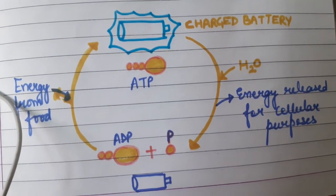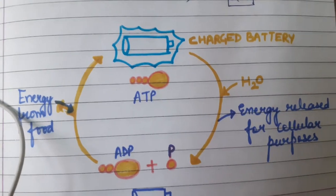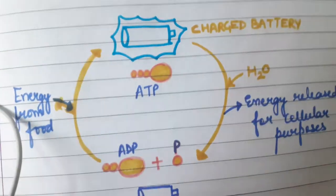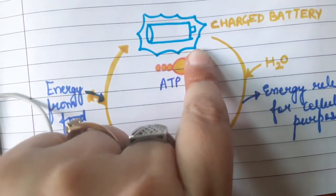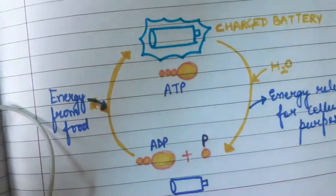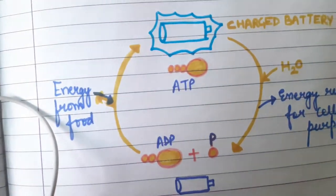Let me explain the ATP ADP cycle in a colorful manner. See, I'm talking of a battery. Suppose this is the ATP molecule. At this time we have a charged battery, we have enough energy for doing work.